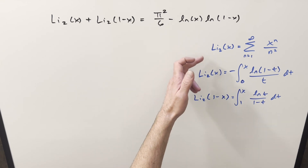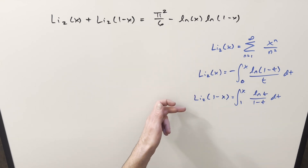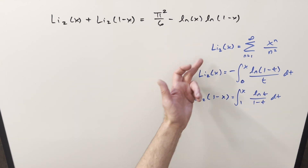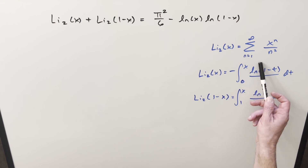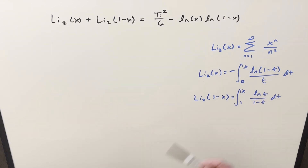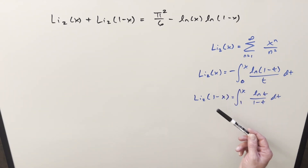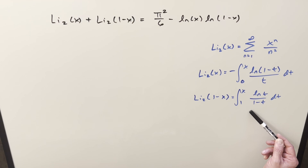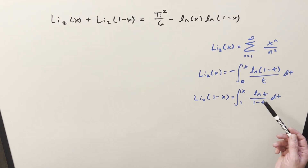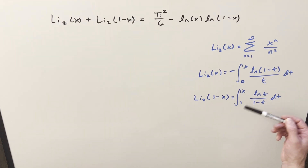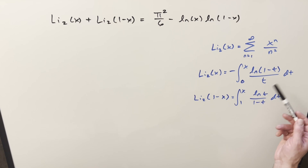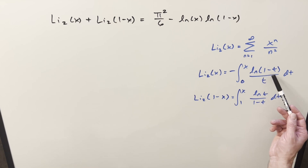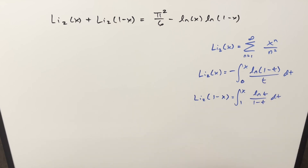What we're going to need for this is our definitions. I've got three different definitions for the dilogarithm over here to the right. First we have our series definition up top, and then we have two different integral definitions down at the bottom. These are pretty similar — you can just go between these with a substitution, something like u equal to 1 minus t.